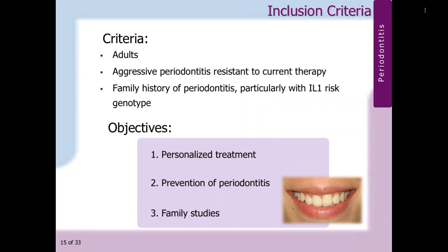What types of patients is this test recommended for? Adults diagnosed with aggressive periodontitis, especially those who are resistant to current therapy. Also, adults who have a family history of periodontitis with the IL-1 genotype. Why should one undergo the test? The objective is to treat the patient based on personalized treatment based on their genetic results, and also to prevent periodontitis in an individual or family member who may not know they carry the genetic risk.